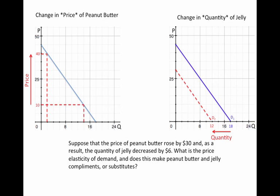Suppose the price of peanut butter rose by $30 and as a result the quantity of jelly decreased by $6. What is the price elasticity of demand and does this make peanut butter and jelly complements or substitutes? So we see here that price rose by $30 and that quantity fell by $6.